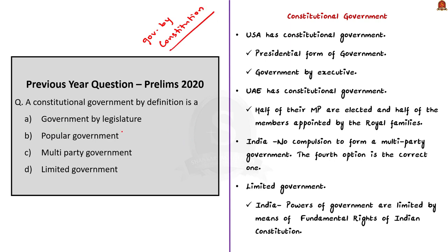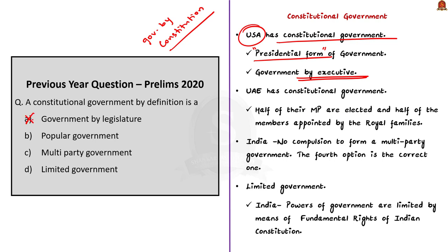The first option is government by legislature. This option is not always the case. For example, the USA has a constitutional government, but the USA follows the presidential form of government. The presidential form of government is a government by the executives, not by the legislature. So the first option does not seem fit and we can eliminate it.